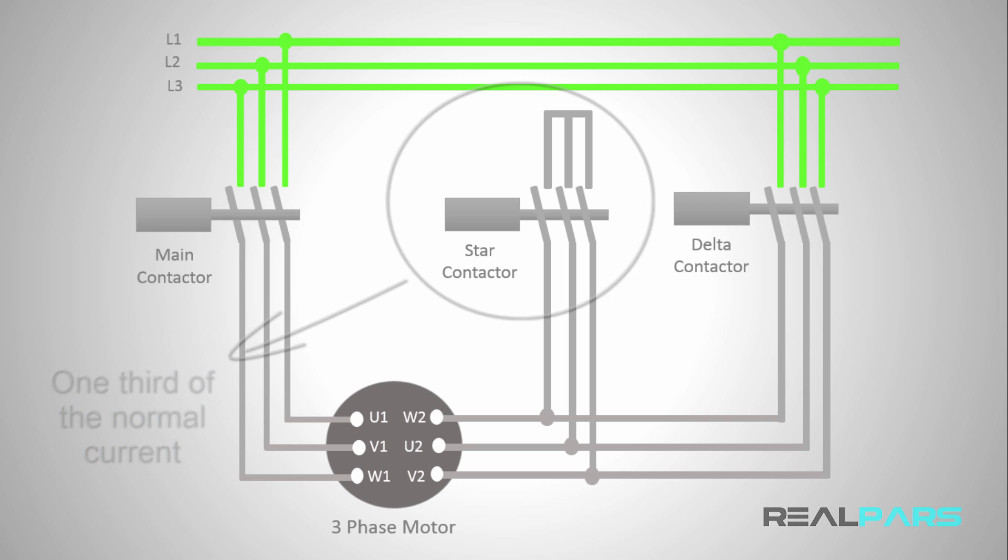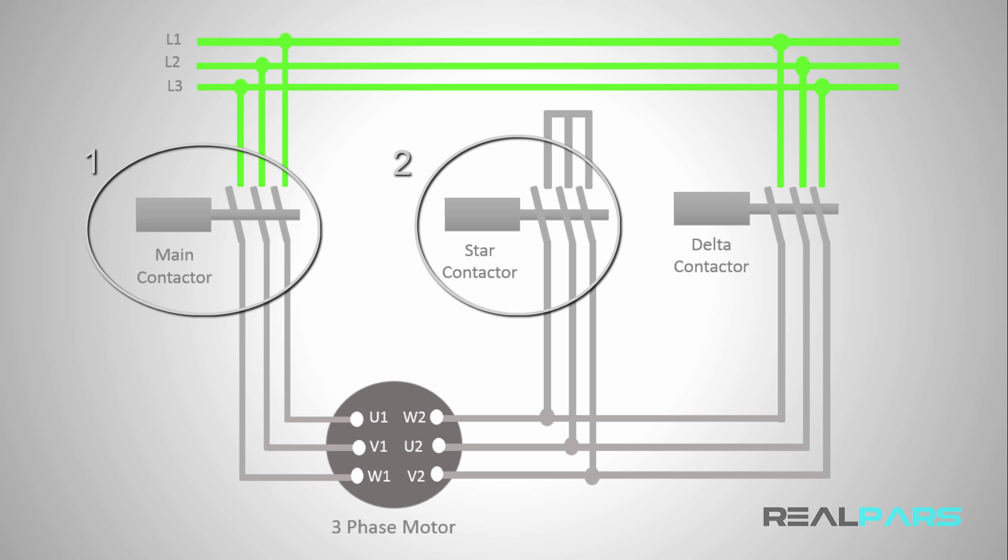In this diagram, you can see this method of starting the motor requires that you use three contactors instead of one. In the next videos, I'll go into more depth of how this star delta starter can help you to reduce the start current of the motor.